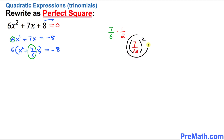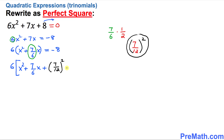Now I am going to write down that quantity on the left-hand side. The 6 is still outside. Write x² + 7/6 x, then add (7/12)². Since we added this quantity, we must also subtract it at the same time. Make sure whatever you are adding, you subtract as well. On the right-hand side we still have -8.